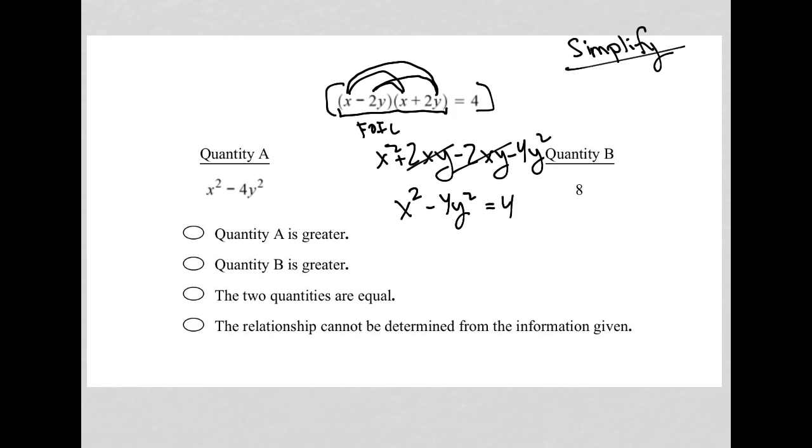So now what is quantity A? Well, quantity A is x squared minus 4y squared. We see that same thing here, which tells me that quantity A is actually equal to 4.